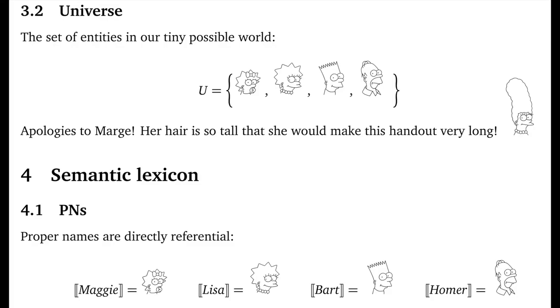The first step is one we've already discussed at length. Our proper names refer directly. So you've got proper names Maggie, Lisa, Bart, and Homer, each one referring directly to an entity in our universe.